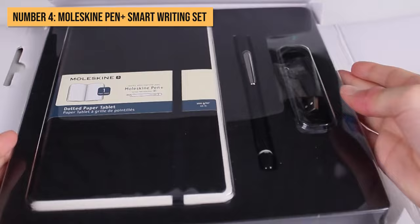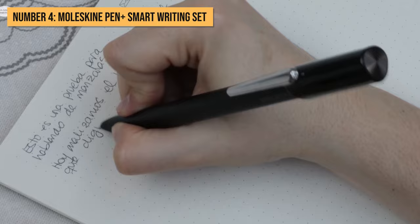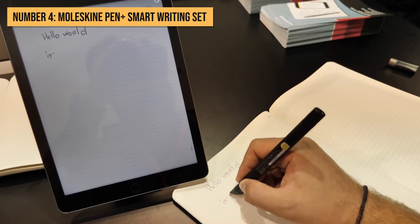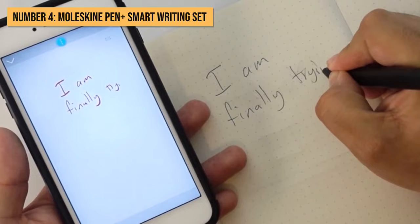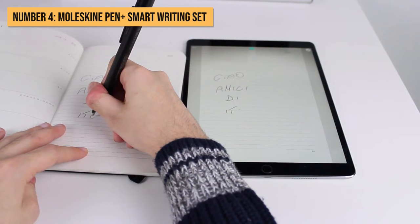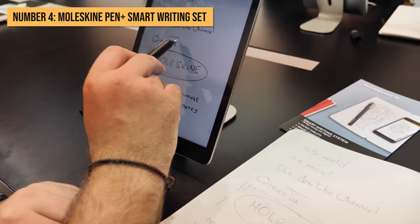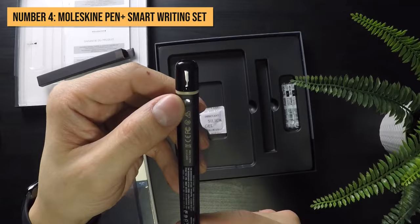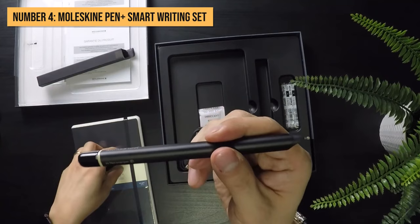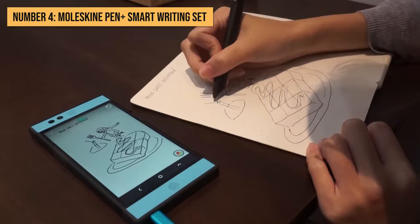So you really do get the feel of a traditional Moleskine. What takes things to the digital side is the slick Moleskine Pen Plus which connects to your smartphone via Bluetooth. As you go about filling the notebook pages with your handwriting using real ink, the pen records and digitizes everything you write in real time. There's also a small record button on the pen for capturing audio notes or commentary in the moment that are perfectly synced with what you are writing.